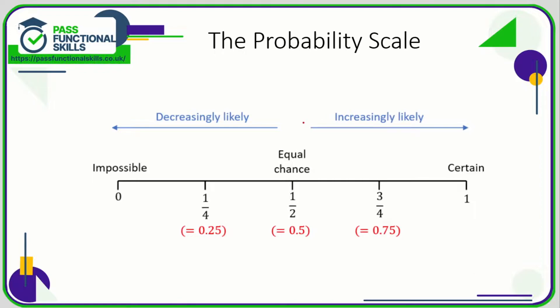If something is a 50-50 chance, like throwing a coin and it landing on heads, then that's an equal chance. So that would be 0.5 or one half. As we go to the right, that means the likelihood is increasingly likely, and as we go to the left going towards zero, that means the probability of it happening is decreasingly likely.